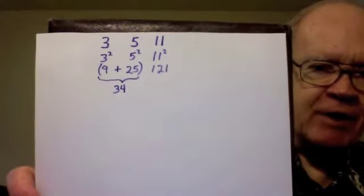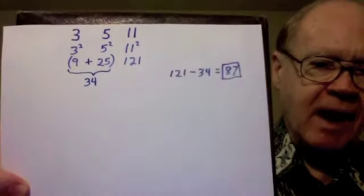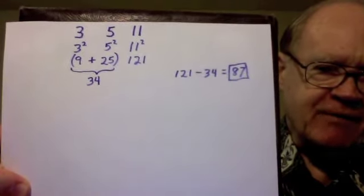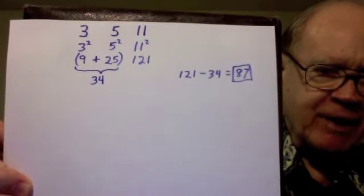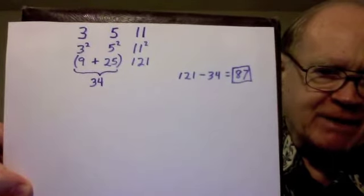I add the two smaller numbers, 9 and 25, and I get 34. I then subtract 121 minus 34, which gives me 87. I set that number aside, and now I'm going to try to get that same number, 87, by a different method.